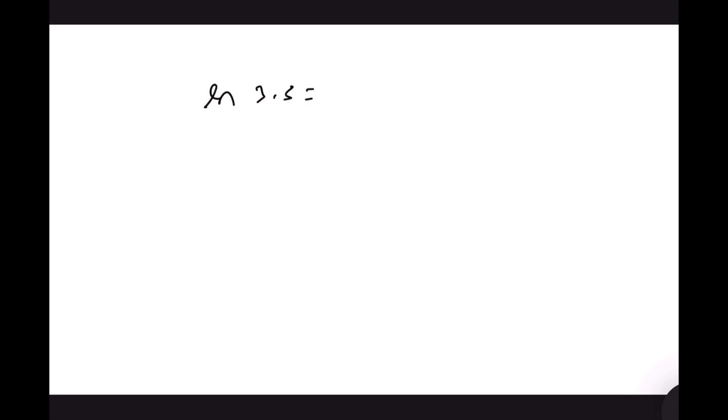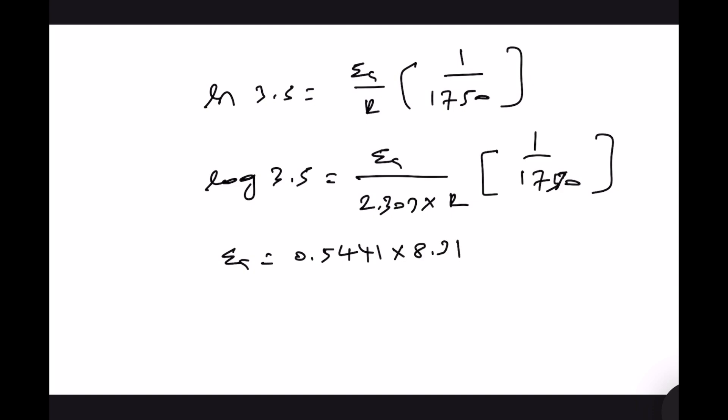This will be ln 3.5 Ea by R 1 by 1750. Let us make it to base 10 log 3.5 equal to Ea by 2.303 times R 1 by 1750. If we rearrange then log 3.5 value is given in the question paper 0.5441 R value is also given 8.31750 times 2.303.